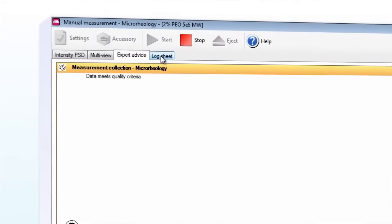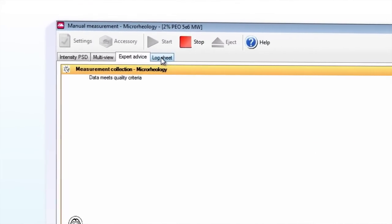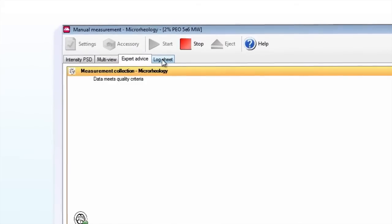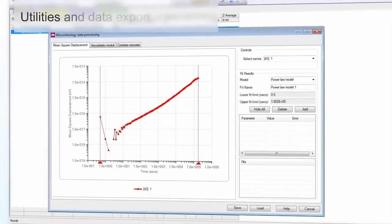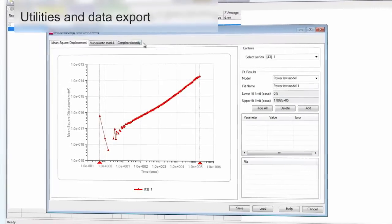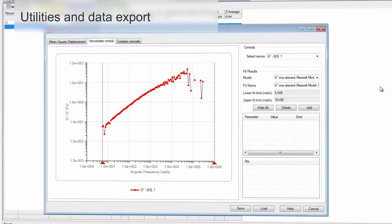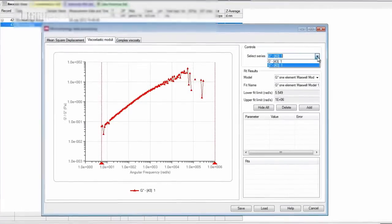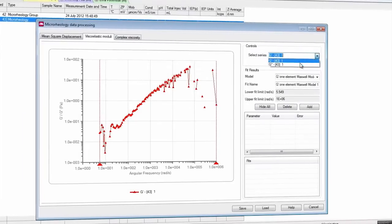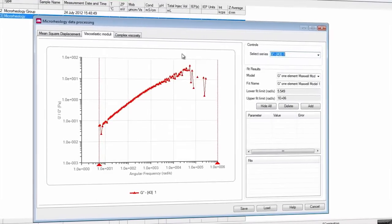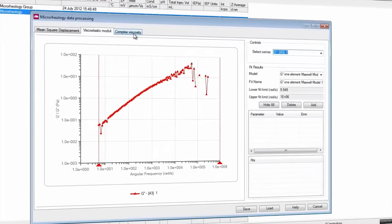As with all Zetasizer measurement types, the microrheology measurement presents software expert system guidance on the quality of the data. The microrheology utilities panel shows three charts: the MSD, the viscoelastic moduli and the complex viscosity with data range selection and model fitting available. The data can also be easily exported to allow for use with a wider range of rheological analyses.